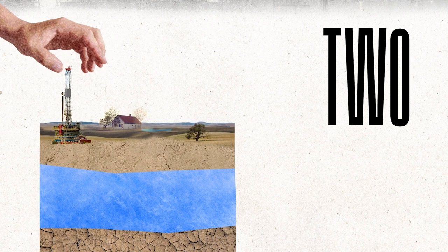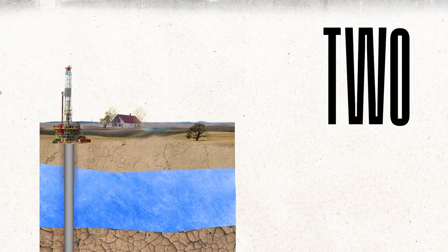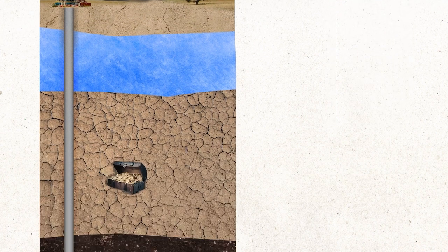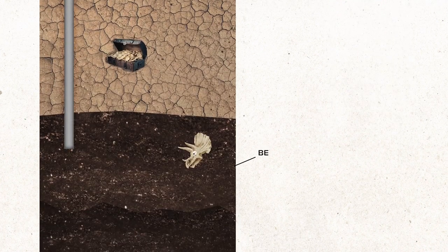Step 2. Drill a vertical well 3,000 meters deep all the way down to the bedrock.